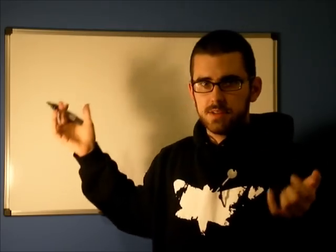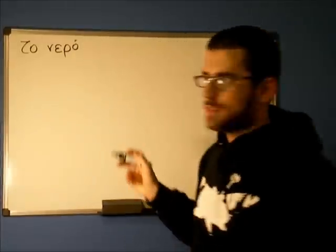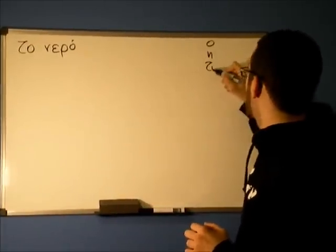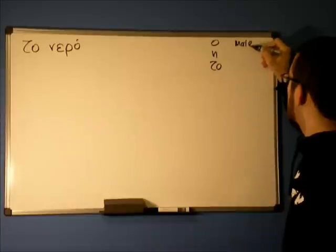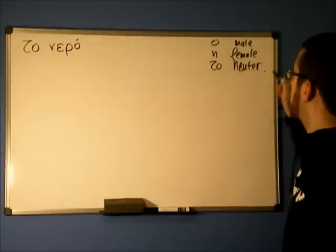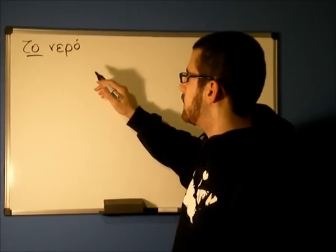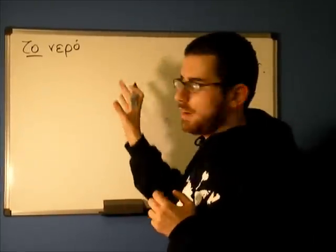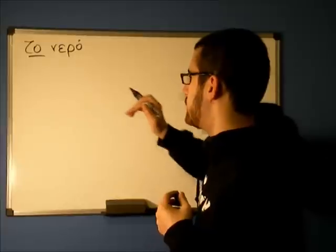First off, we have the most basic thing in the universe for human life: "to nero", which means "the water". Just for the grammatical aspect of it, you have "o", "i", "to" — the male, female, and neuter articles. This is a neuter noun, and it just means water. Do not worry about the declensions — I'll say more about those in the next videos. But you just need to say "nero". Even if you just say the word, people will understand that you're looking for water. It's that simple.